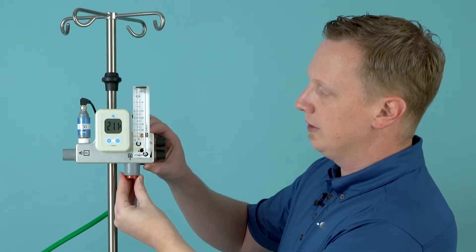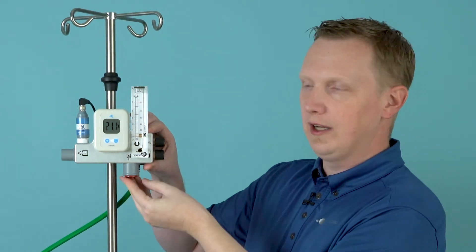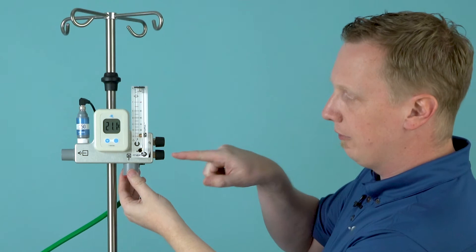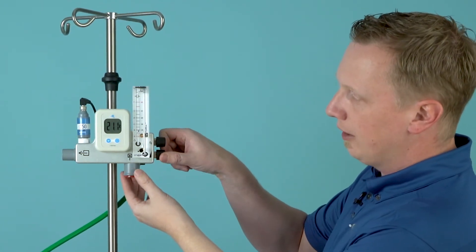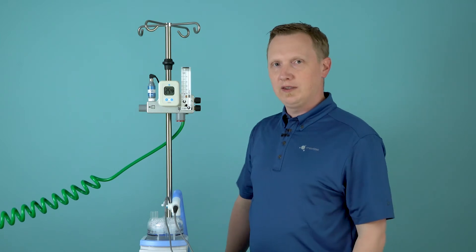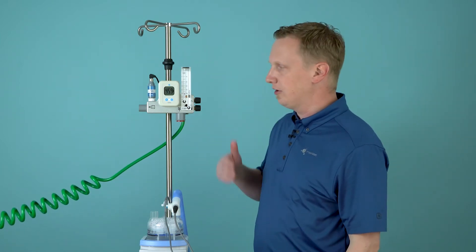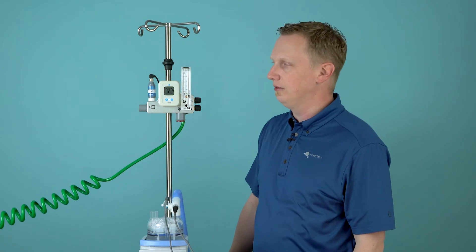This will force just pure oxygen to come through the device. So we're going to turn our flow knob, the bottom one, just give it a couple little turns so we get some oxygen flowing through there. And we want this to flow for two minutes just to make sure everything gets purged through and has a chance to settle.